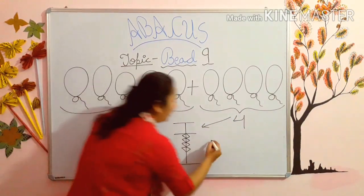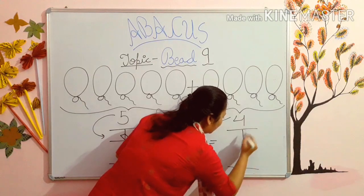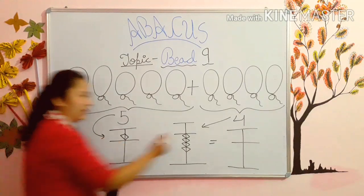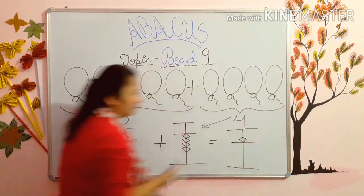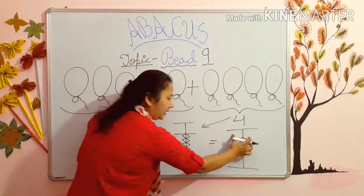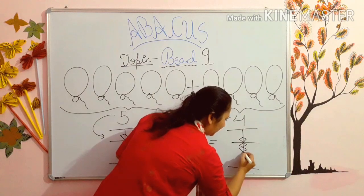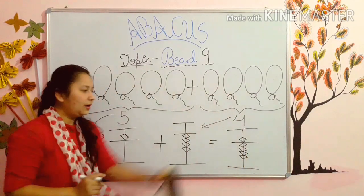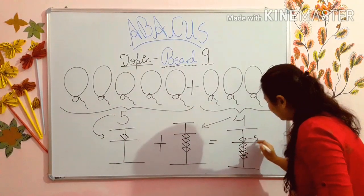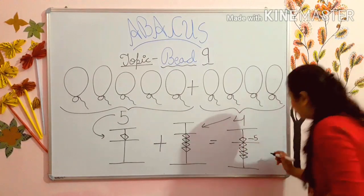Now we will make bead 5. Kids, now we will add them. First of all we will put bead 5 here, and then we will also put these 4 beads. Then we put 4 beads here. Now count it — see: this is 5, then 6, 7, 8, 9. So this is bead 9.